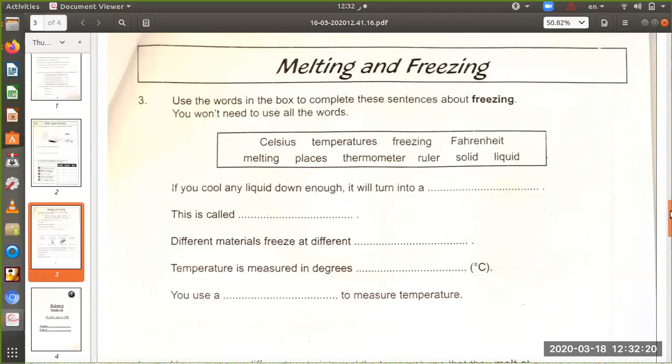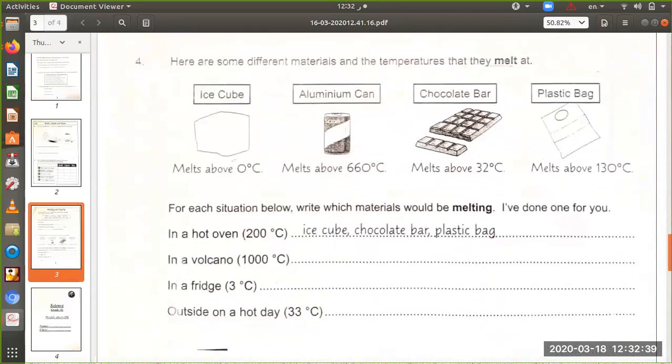If you cool any liquid down enough, it will turn into a solid. This is called freezing. Different materials freeze at different temperatures. Temperature is measured in degrees Celsius. We use a thermometer to measure temperature.